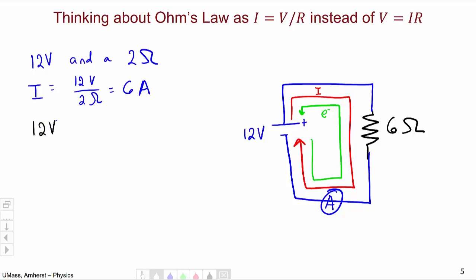Well now we have a 12 volt battery and a 6 ohm resistor so the current will be 12 volts over 6 ohms, 2 amps.